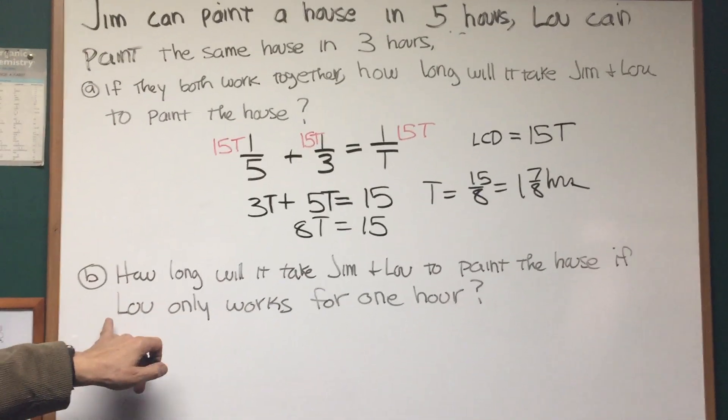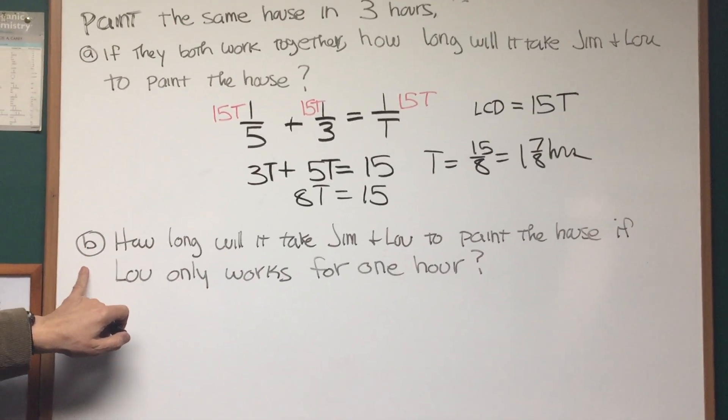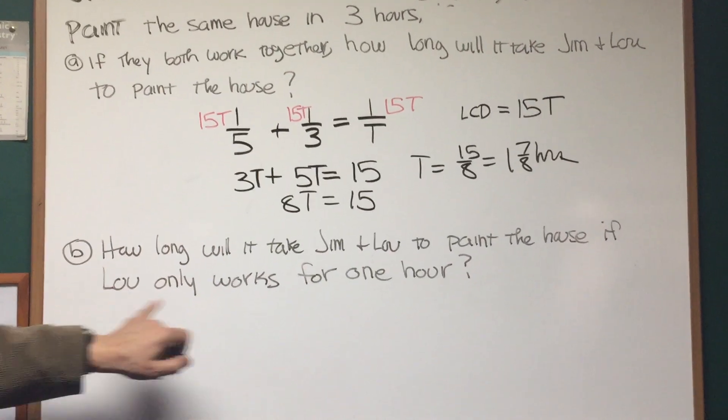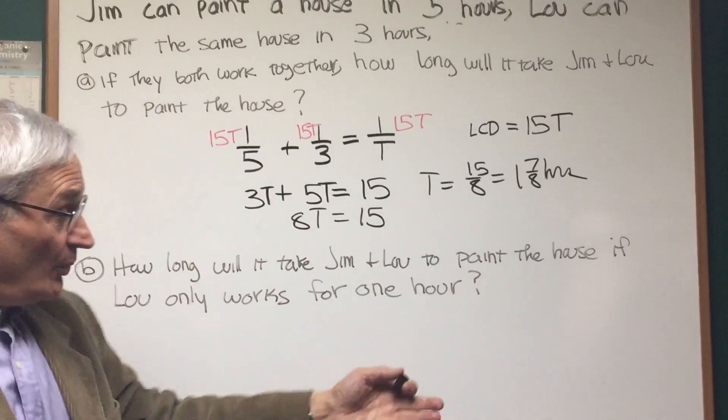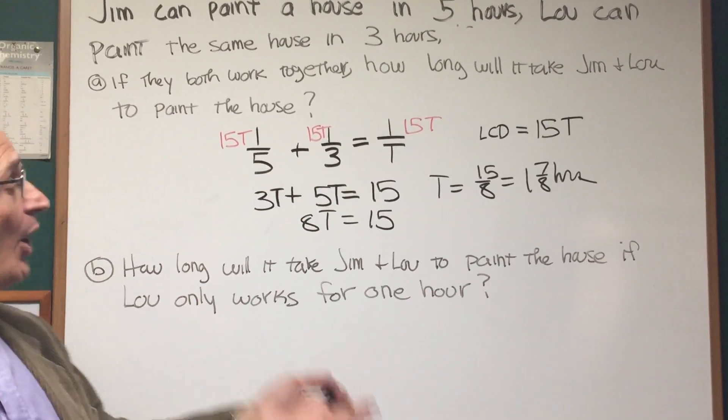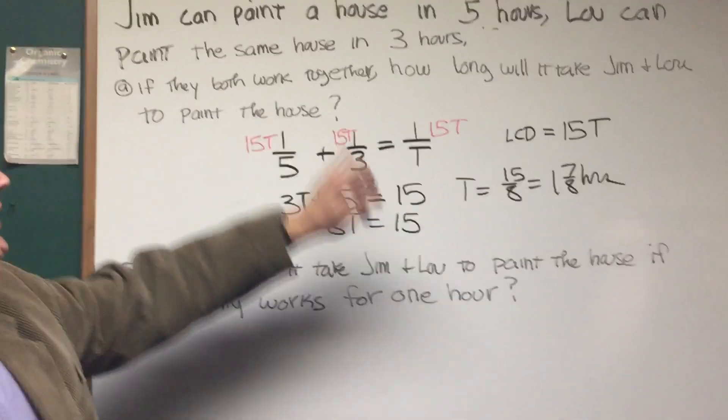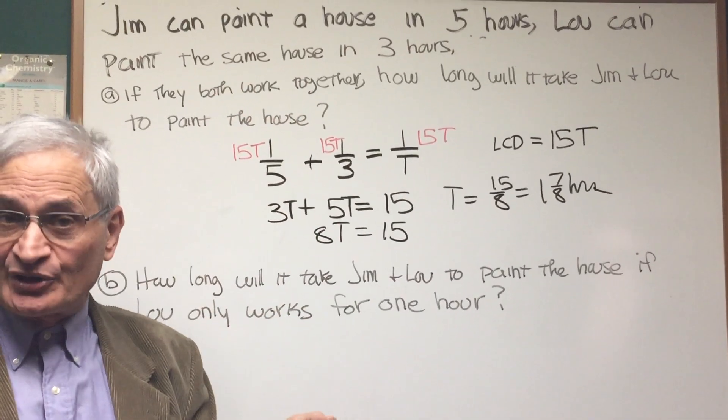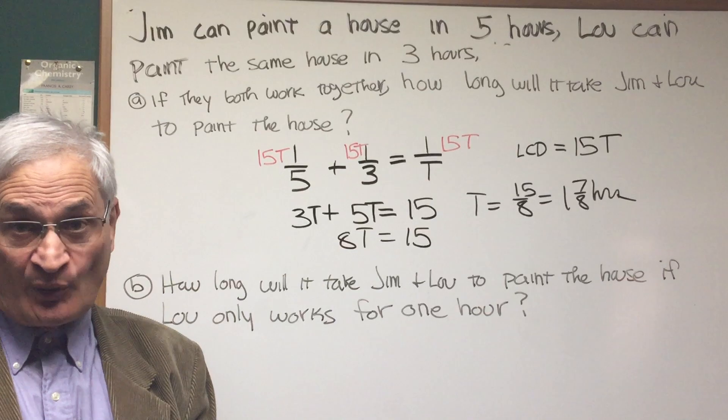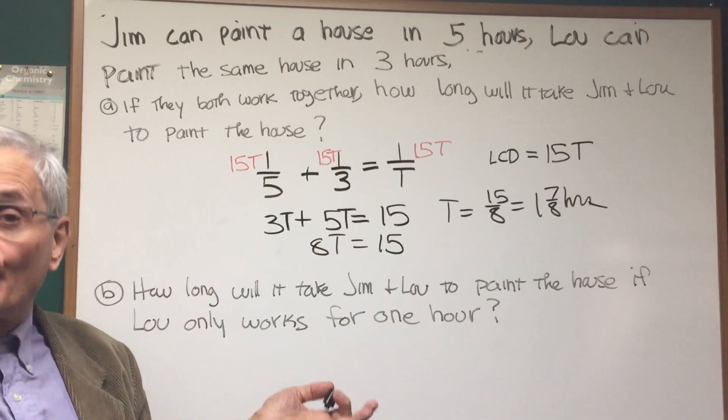Here's a little variation on that problem. How long will it take Jim and Lou to paint the house if Lou only works for 1 hour? Well, what do you do in that case? If Lou only works for 1 hour, it takes Lou 3 hours to paint the house. If he only works for 1 hour, he's painted 1 third of the house.